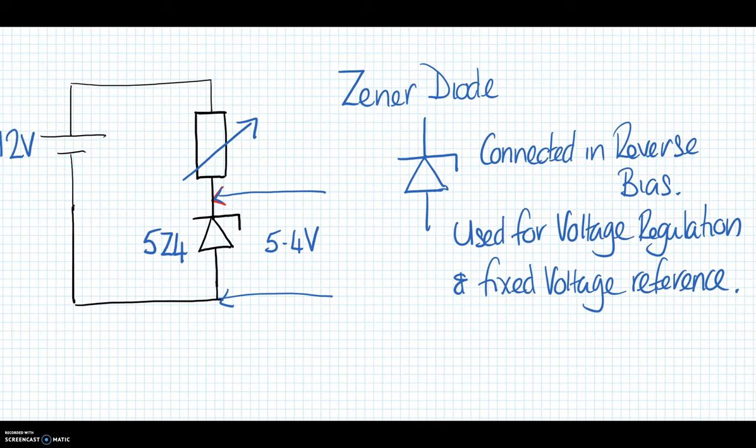So a Zener diode is different in the fact that its symbol's slightly different, it has this little tick on the side there, but the Zener diode is actually connected in reverse bias. And there's a reason for that. Because what a Zener does is it stabilizes the voltage. So if we were to put any voltage greater than 5.4 volts across the Zener, the Zener will always give 5.4 volts, no matter what the input voltage is. So it literally keeps everything at 5.4.